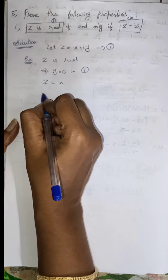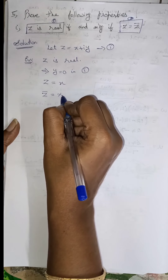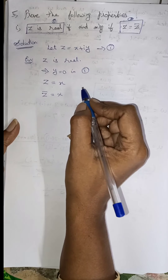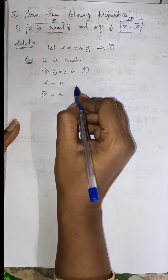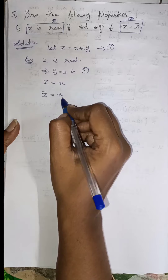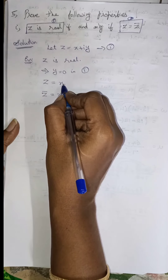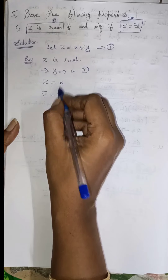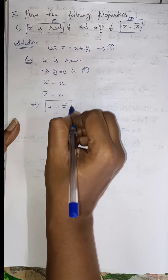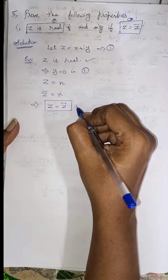Z equals X. Find Z bar — the conjugate means only the imaginary part sign changes, keeping the real part the same. So Z bar also equals X. Therefore Z equals Z bar, which implies Z equals Z bar. Hence the first condition is proved.